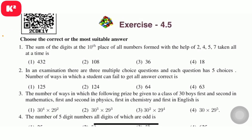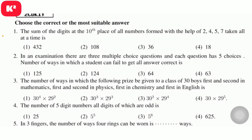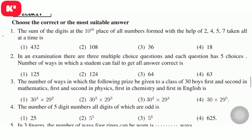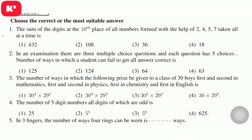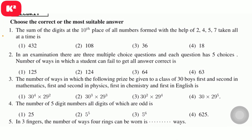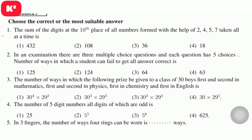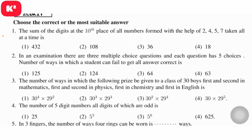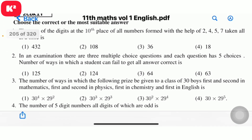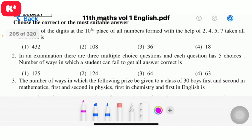Hi students. Question 1: The sum of the digits at the 10th place of all numbers formed with the help of 2, 4, 5, 7 taken all at a time. Question number 1, option 2 is the answer.